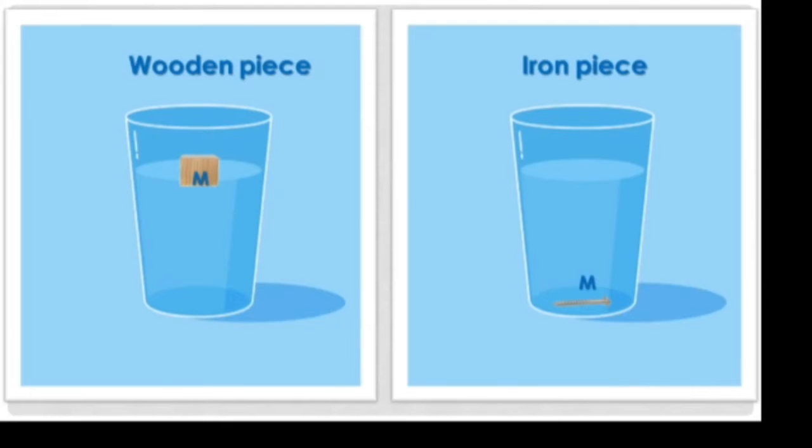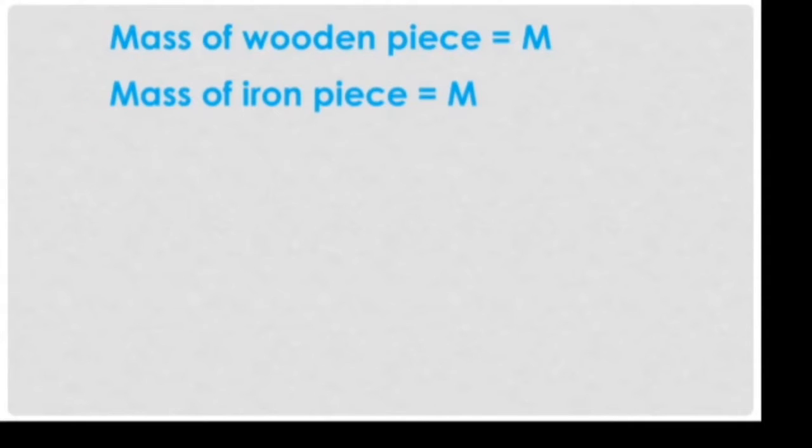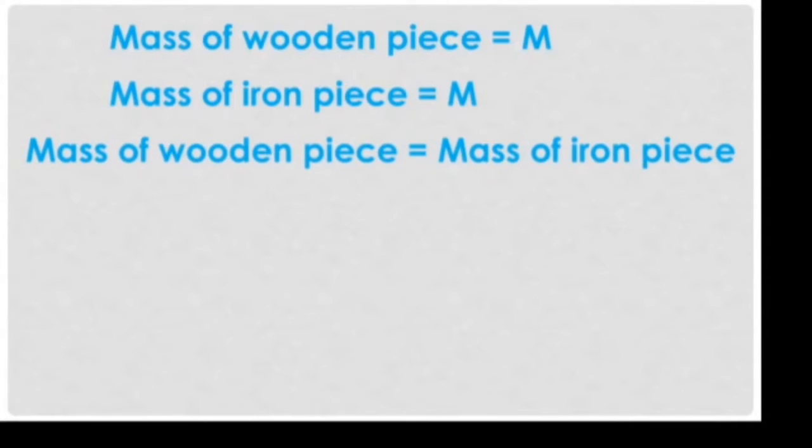In this example, we have seen mass of wooden piece is M and mass of iron piece is also M. That means mass of wooden piece is equal to mass of iron piece.